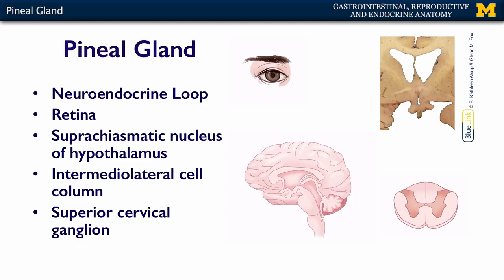It's a neuroendocrine loop that begins with the retina. Light coming into the retina, going through the optic nerve, goes to a structure within the hypothalamus called the suprachiasmatic nucleus.